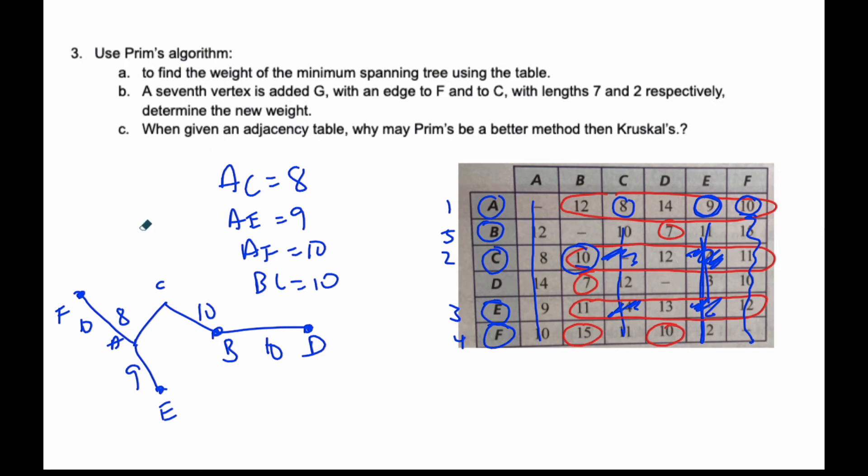So here is my minimum spanning tree. The last one I had to put on was B to D. I didn't space this out very well. I add them all up: 17, 27, 37, 47. So my minimum spanning tree is 47.